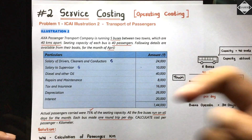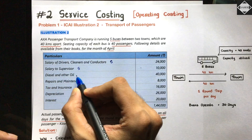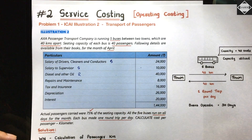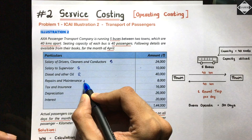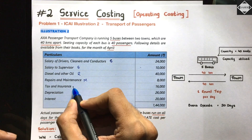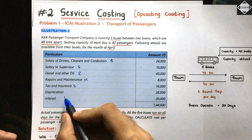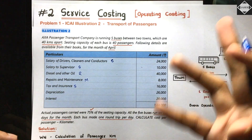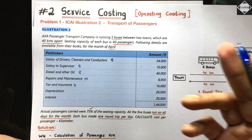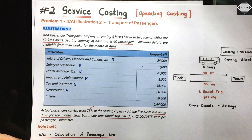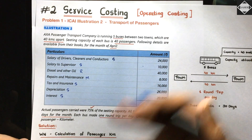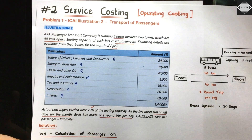Repairs and maintenance - this is maintenance charges, semi-variable. Tax and insurance - does not depend on whether buses run, so fixed cost - standing charges. Depreciation - charged on a time basis here, not related to activity, so it's also fixed cost - standing charges. Interest - also standing charges, since loan interest is payable monthly regardless of service operations.